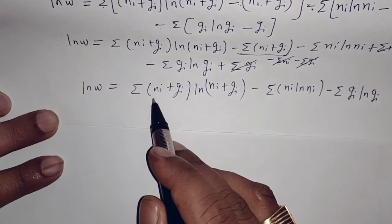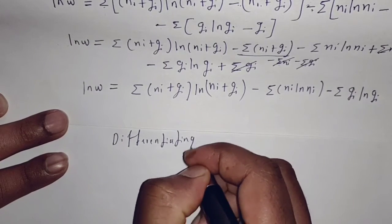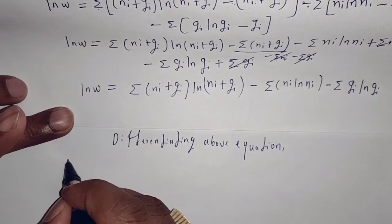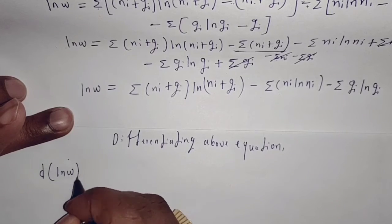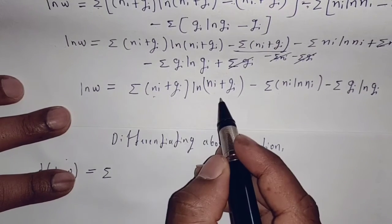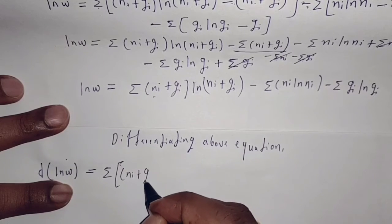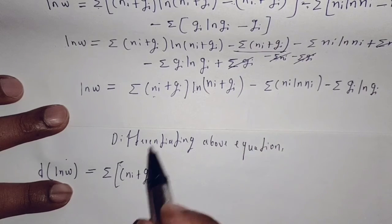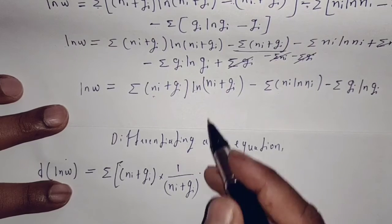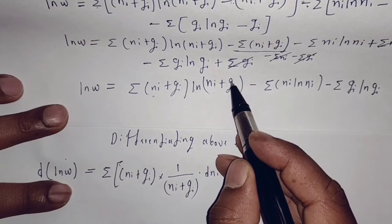Now let us differentiate this equation. Differentiating ln(W), we get a summation. Applying the product rule: keeping the first term as it is and differentiating the second, (ni + gi) times the differentiation of ln(ni + gi) gives 1/(ni + gi) times d(ni). Note that d(gi) = 0 because gi is constant. Then plus ln(ni + gi) times d(ni + gi) = ln(ni + gi)·d(ni).